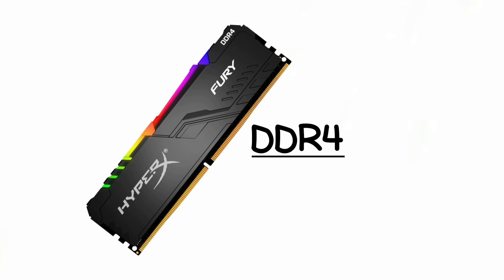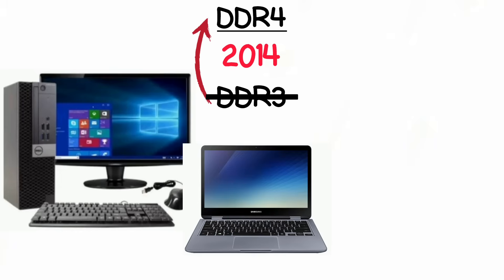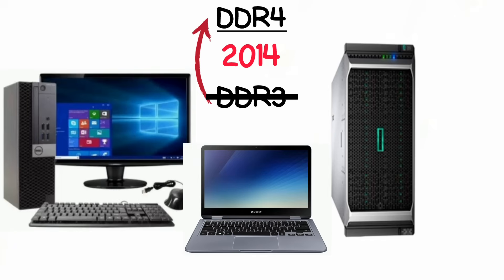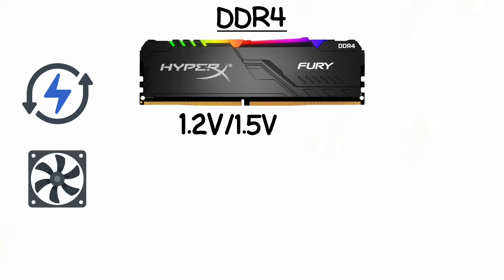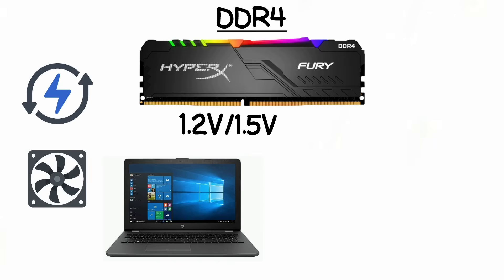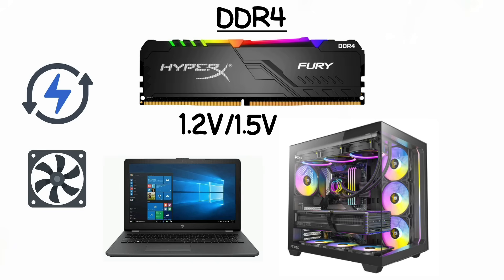DDR4 was introduced in 2014, replacing DDR3 as the new memory standard for desktops, laptops, and servers. It operates at 1.2 volts compared to DDR3's 1.5 volts, making it more power efficient and cooler, perfect for both laptops and high-performance PCs.